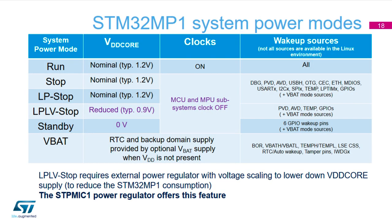For system power modes, there are run, stop, standby, and VBAT modes. There are also per-core modes called C-run and C-stop, applicable individually to the A7 and M4. In run mode clocks are active; stop mode halts clocks to both cores; standby switches off the core voltage supply completely; and VBAT provides the lowest available power mode on the device.